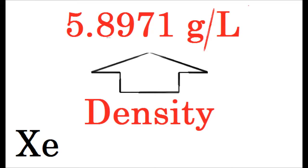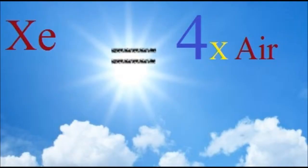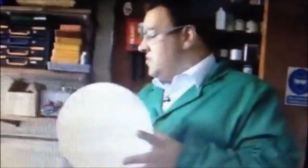Xenon gas has a high density of 5.8971 grams per liter. That makes xenon about four times as dense as air. As seen here, when a balloon is filled with xenon gas, it immediately drops to the ground, whereas it takes a balloon filled with air much longer.